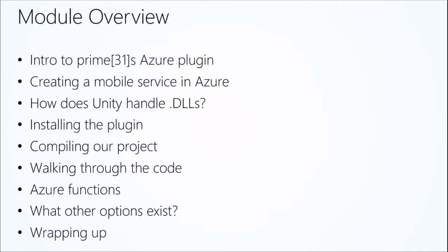Prime31 is providing a year of free plugins for Unity for the Microsoft platform — their essentials plugin to do things like live tiles, Azure cloud integration, in-app purchases, and things like that. Free for one year from Prime31.com. Quick module overview: we're going to do an intro to the Azure plugin, creating your first mobile service in Azure, understanding how Unity handles DLLs — it's a very eccentric and sometimes complicated method. We'll also understand how to install the plugin, compile our project, and walk through bits of the code. If you're familiar with LINQ or search queries, you'll be familiar with this as well. We'll wrap up with what other options exist for developers.